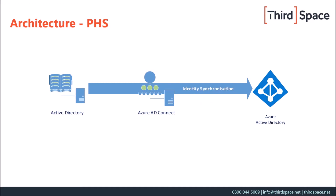Password hash sync is even more straightforward. In this case, there's no agent installed on the Active Directory. Azure AD Connect simply takes the identity and the hash of the user's password and synchronises that up to Azure. When the user tries to access the service, they're authenticated directly against Azure itself.